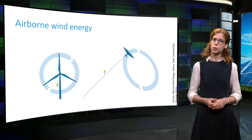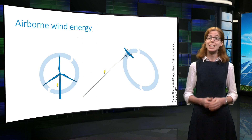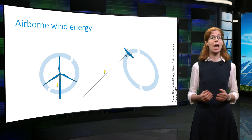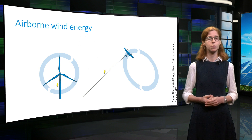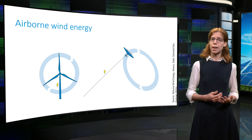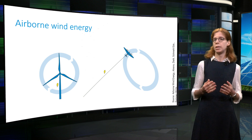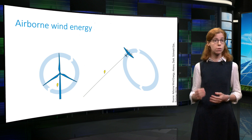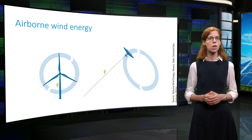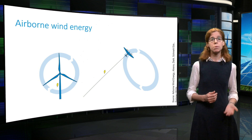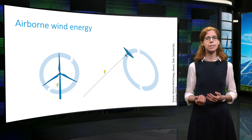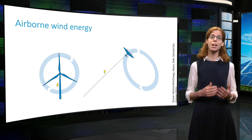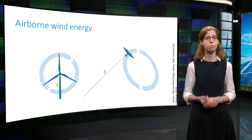The last topic I want to touch upon is airborne wind energy — that is, harnessing wind energy at high altitudes. In this context, the wind turbine is replaced by a wing or an airplane tethered to the ground. Due to the absence of a tower and long blades, airborne wind energy systems can reach altitudes of several hundreds of meters.